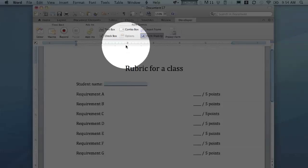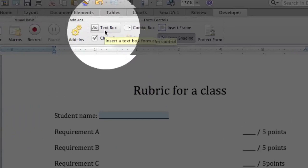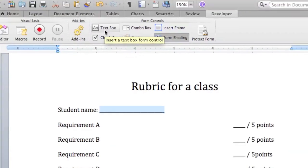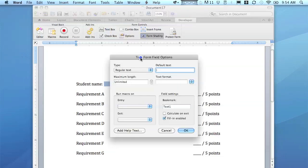For Student Name, I'm going to double-click that and I'm going to click Text Box. What it's going to do is replace my line with a gray box. There you go, you can see a little bit better. What that means is eventually we'll protect this document, and these fields are the only fields we'll be able to change.